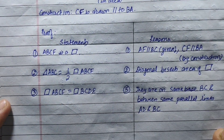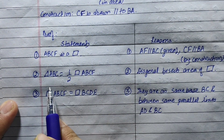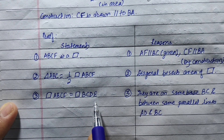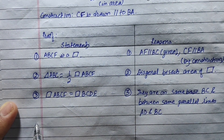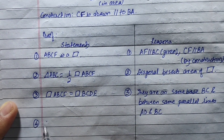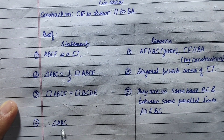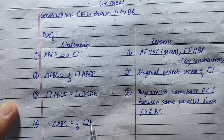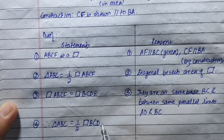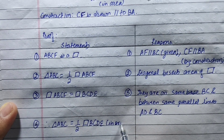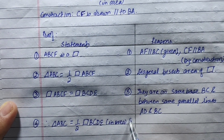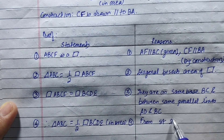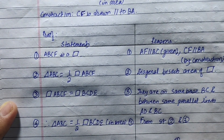Finally, we have to prove it. Parallelogram ABCF equals parallelogram ABCD. Triangle EBC equals half of parallelogram BCDE. From statements 2 and 3, this is proved.